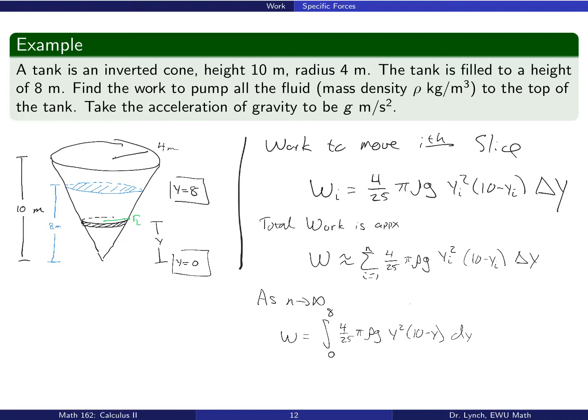I won't go through the computation of the definite integral in all of its detail, but you get out a number and that number ends up being 8192 over 75 times pi rho g joules. Of course, the unit here of work in these standard units is joules.